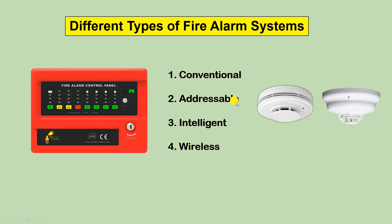The second type of fire control panel is addressable. In an addressable fire alarm system, each detector has a set address. If fire is detected through a detector, the control panel will display the number or address of that specific detector, so you can track the exact location of the fire, unlike conventional type where you only know the zone.